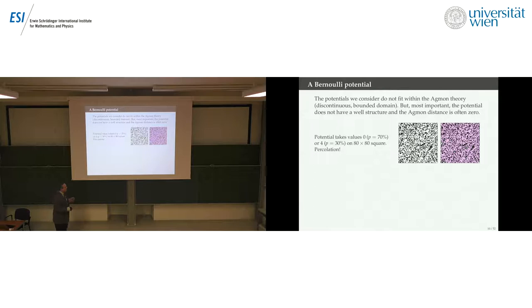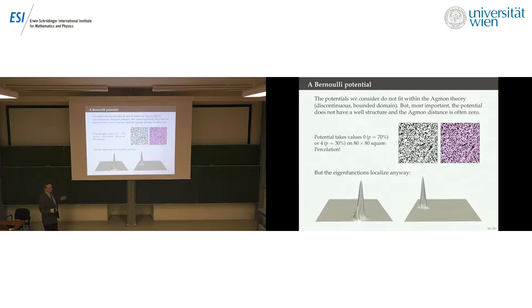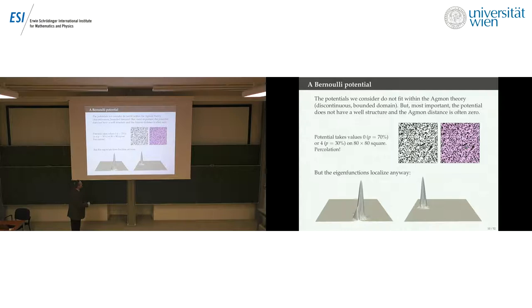You can't apply Agmon theory to a potential like that, and in fact most of our random potentials have that problem. However, you can compute the eigenvalues on your computer — these are the fundamental and second eigenvalue with that potential. We need an explanation for why these localize and why they localize here and there rather than somewhere else.